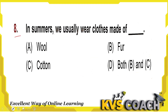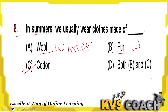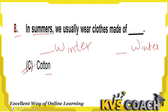Next: in summer we usually wear clothes made up of what? In summers we use cotton clothes — option C. Woolen clothes like sweaters and jackets are worn in winters because they are warm clothes. But in summers we use cotton clothes. Option C is the right answer.